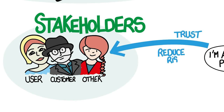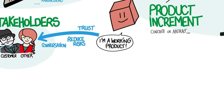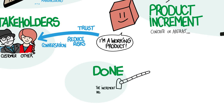Direct interaction with stakeholders builds trust and reduces market risk — that is, it increases the likelihood that the product will be a success. With a working product in hand you can have good conversations about what you have, what changes are needed, and how best to move forward. You can also identify work to delay or skip entirely, saving both time and money. This is possible because each product increment works — it is done.